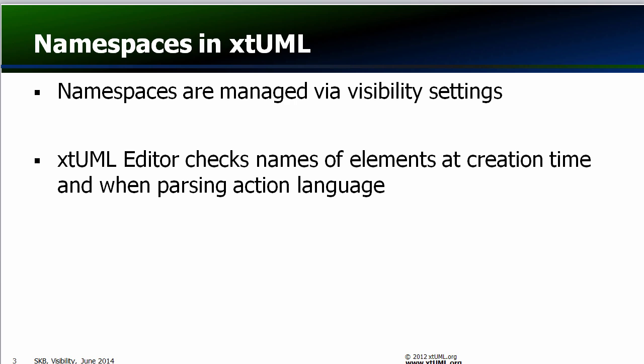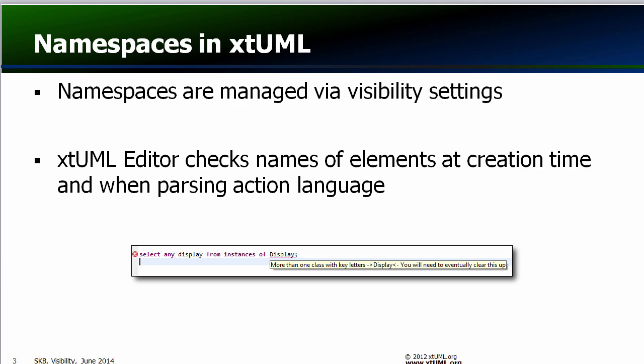Now let's talk about namespaces. Namespacing is supported and managed entirely by means of visibility. That is, two elements with the same name are permitted provided that they are not simultaneously public in any action language scope. XTUML Editor does some checks when elements are created to help avoid name collisions, and the parser will indicate a parse error on any name collision it finds.